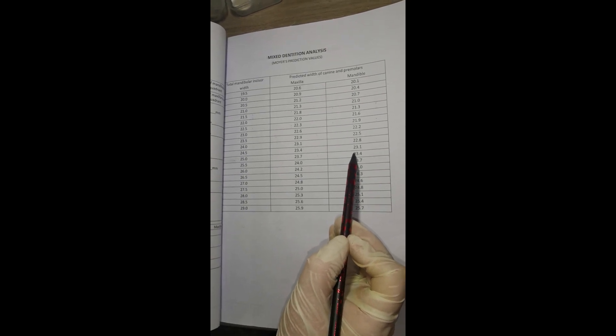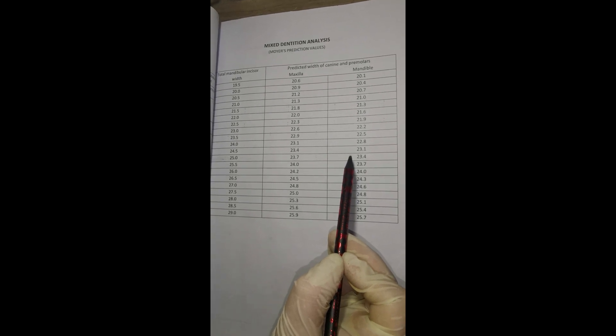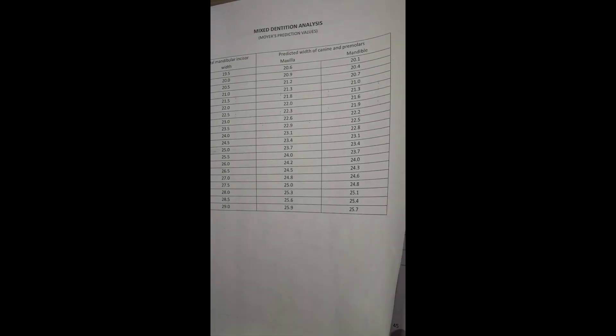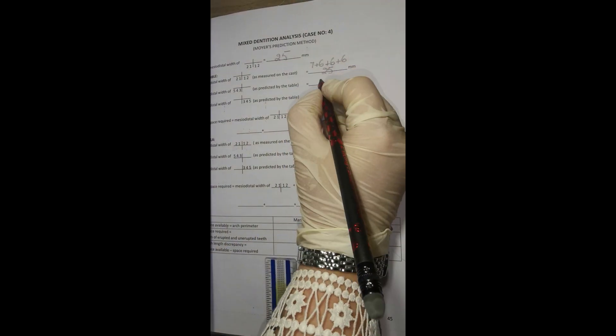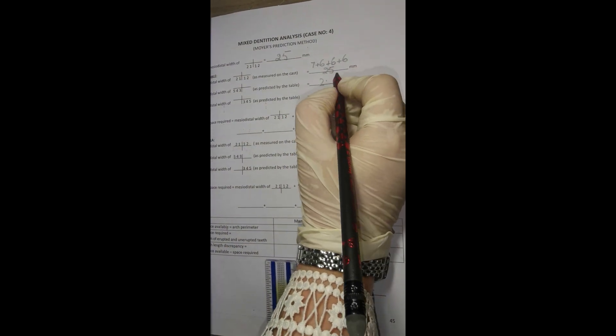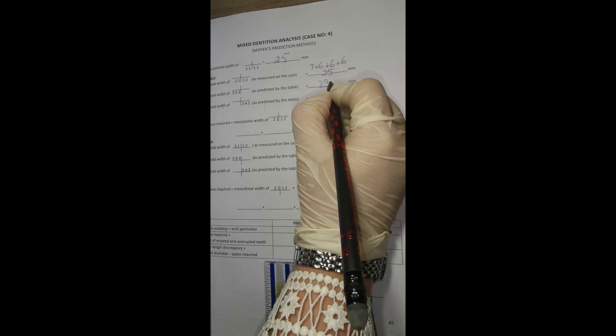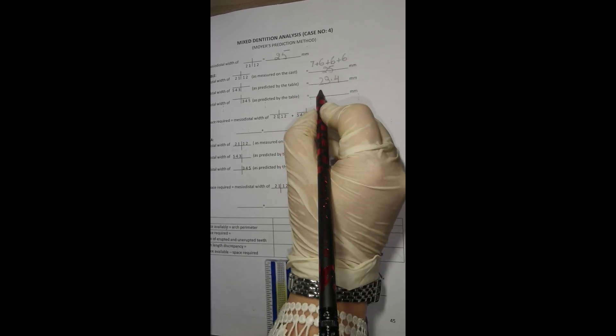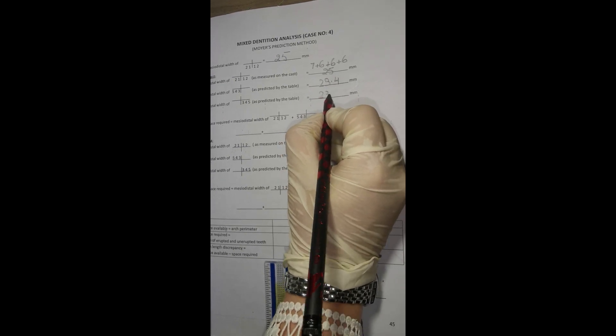According to this table, predicted width of mandibular permanent premolars and canines is 23.4 mm. Write this here for one side and here for the other side.